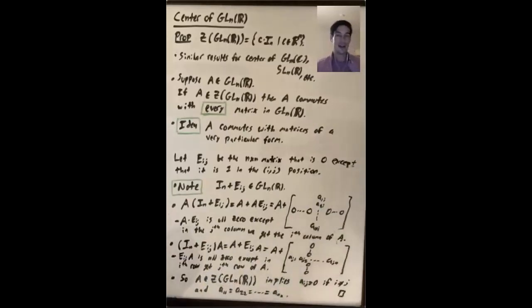So the proof is pretty easy if you remember this idea of looking at these special matrices, identity plus Eij. Otherwise it can be a little bit of a mess if you try to multiply A by a more general matrix.